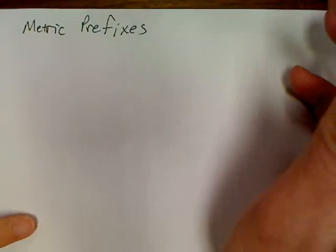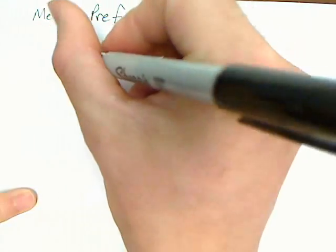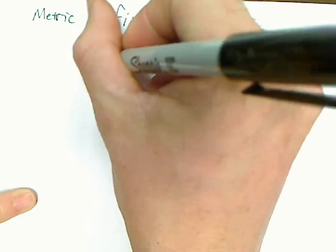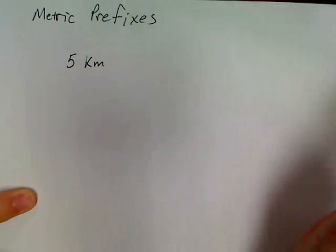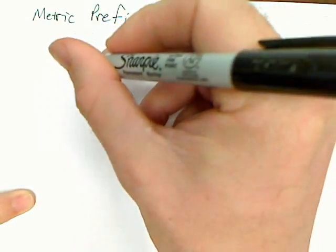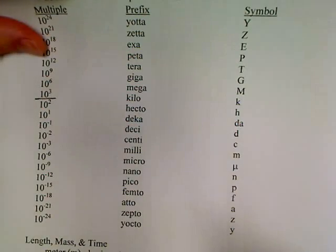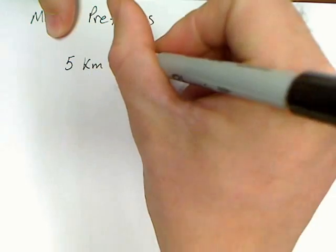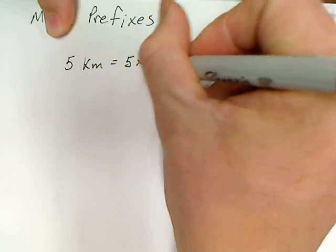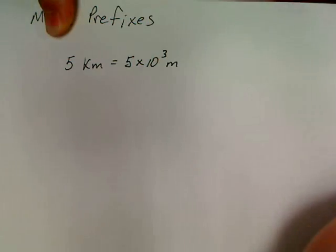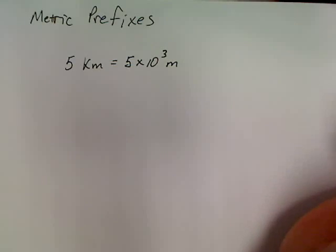A few prefixes y'all are probably familiar with is something like a kilometer or a kilogram. Everybody's kind of heard of a kilometer before. So, what does it mean if something is 5 kilometers? Well, all you have to do is look at your metric prefixes. A kilometer is 10 to the 3 meters. So, 5 kilometers is 5 times 10 to the 3rd meters. And that's all a kilometer is.